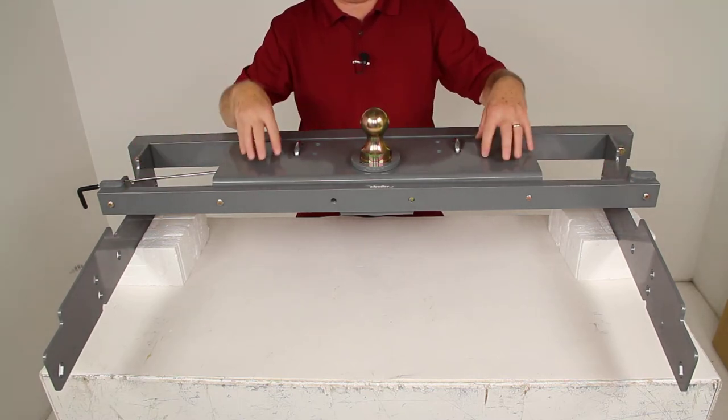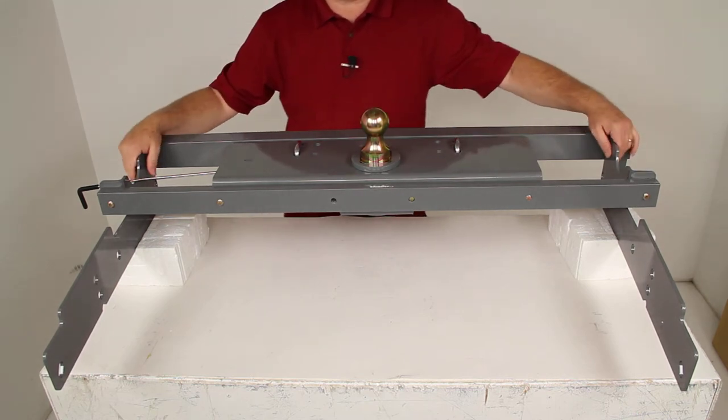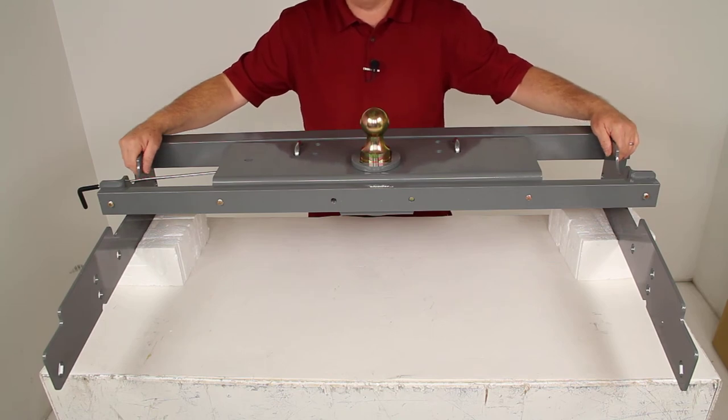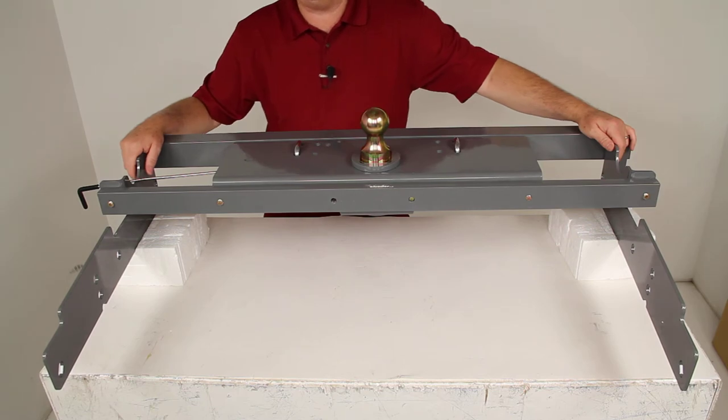Now for this demonstration I've already installed the hitch to this custom installation kit. This kit is specifically designed to fit the 1988 to 1998 Chevrolet GMC C and K series trucks with the six and a half foot bed.